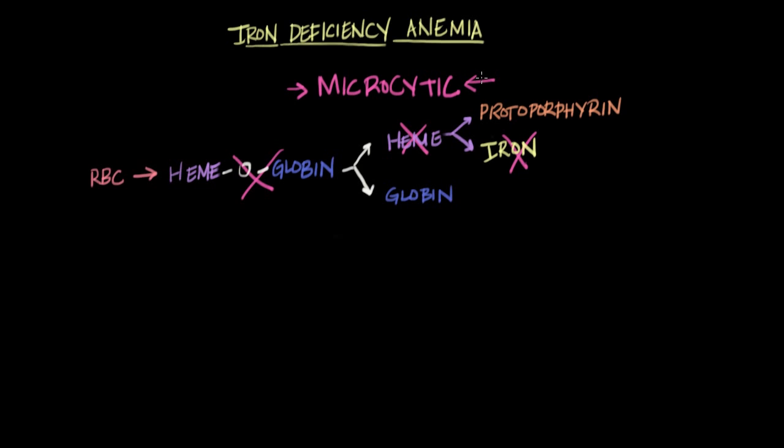A microcytic anemia refers to an anemia where you end up with really small red blood cells. So why does that happen? Is that just something that happens by accident? Well no, it's something that the body does intentionally.